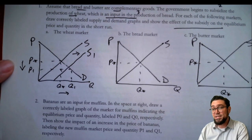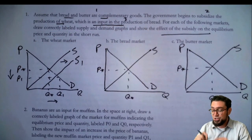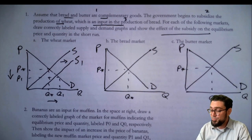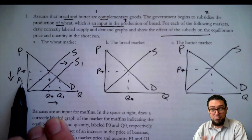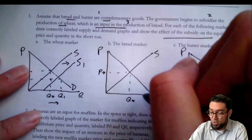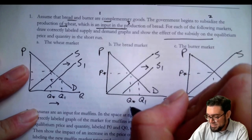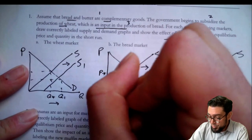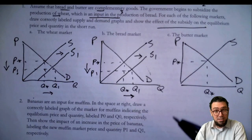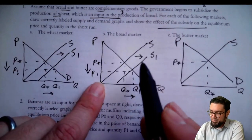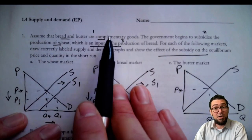The decrease in the price of wheat is really important because wheat is an input into making bread. Now it's cheaper to produce bread because the input — the factor of wheat — is cheaper. There are now lower costs in the bread market, so there's a supply shift there as well. It's important to recognize the government isn't directly subsidizing the bread market, but indirectly they're helping bread manufacturers, and it helps bread consumers too. This subsidy for wheat makes it cheaper to make bread.